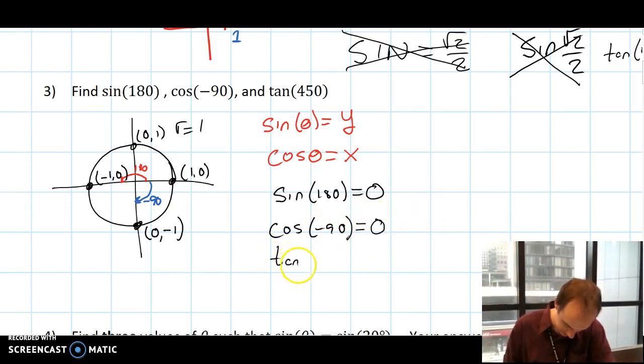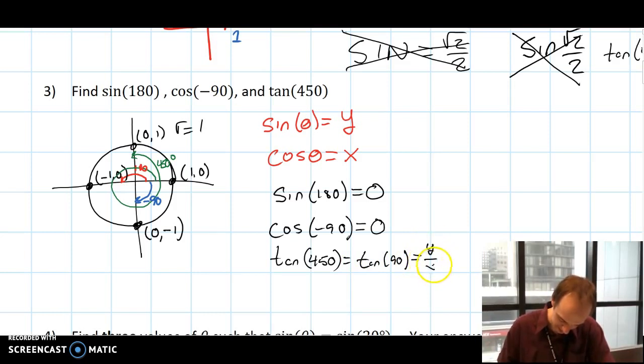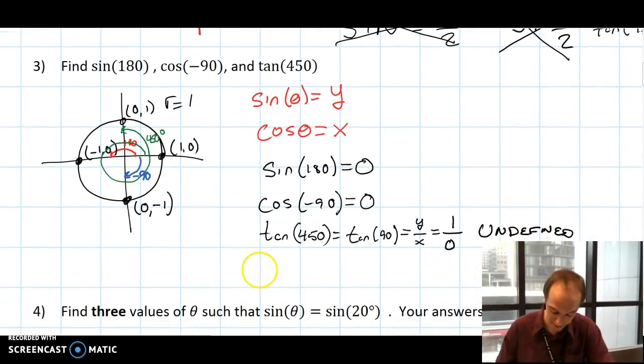Tangent of 450. 450 is 360 and 90 more, so I'm really looking at the angle 90. Tangent 450 is the same as tangent of 90. That's y over x, and that's going to be 1 over 0, which is undefined. Remember that dividing by 0 gives you an undefined value. If you have something like 0 over 1, that's equal to 0, not undefined.